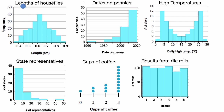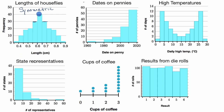Let's first look at this distribution right over here — the distribution of the lengths of house flies. Someone went out there and measured a bunch of house flies and found many between 6 tenths and 6.5 tenths of a centimeter, about 40 flies, and about 30 between 6.5 and 7 tenths. This type of distribution is usually described as symmetric, because if you draw a line down the middle, both sides look like mirror images of each other. More typically when collecting data, you'll see roughly symmetric distributions.